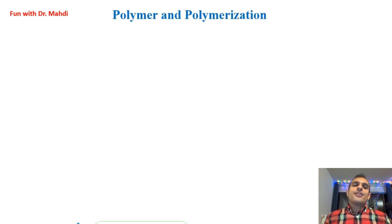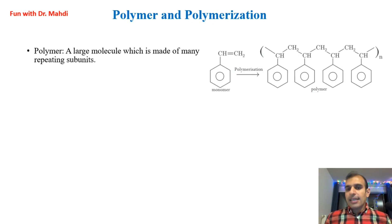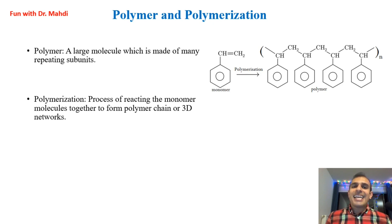First, I would like to give you a definition of a polymer and polymerization. A polymer is a large molecule which is made of many repeating subunits that we call monomers. Polymers are created via polymerization of many small molecules which are called monomers. Polymerization is a process of reacting monomer molecules together to form a polymer chain or three-dimensional networks.